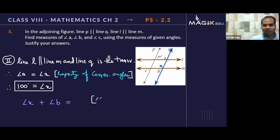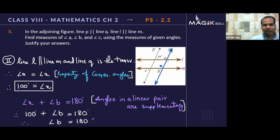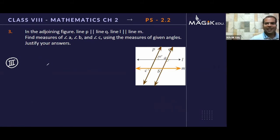x and b form angles in a linear pair, and angles in a linear pair are supplementary. That means if I add them, I get 180 degrees. Having the value of x which is 100 and b unknown, we can transpose and angle b equals 80 degrees. Now I'll identify which are the parallel lines and transversal for finding c.